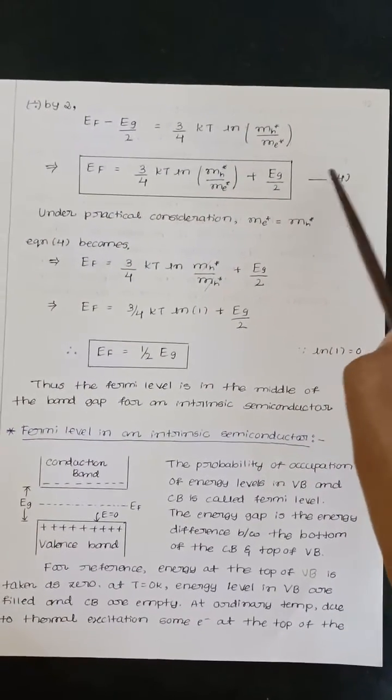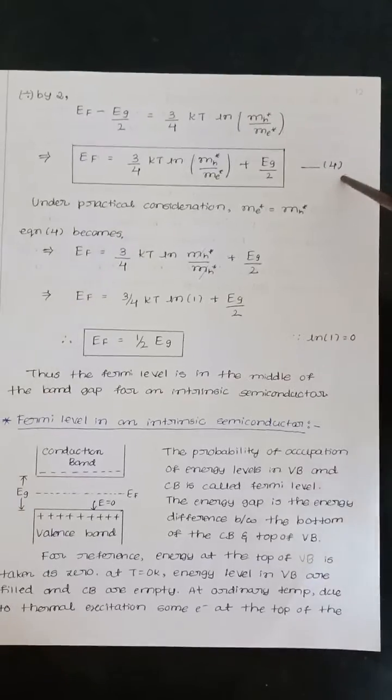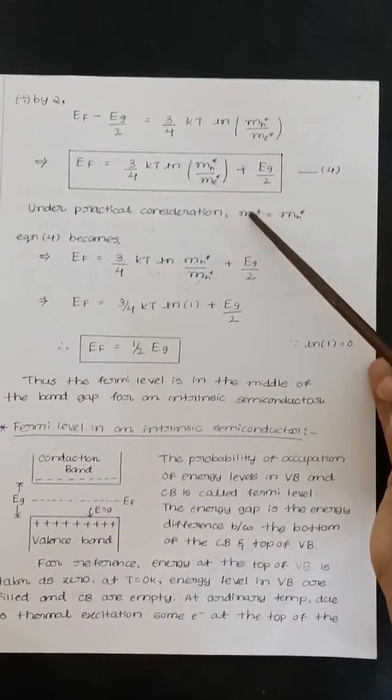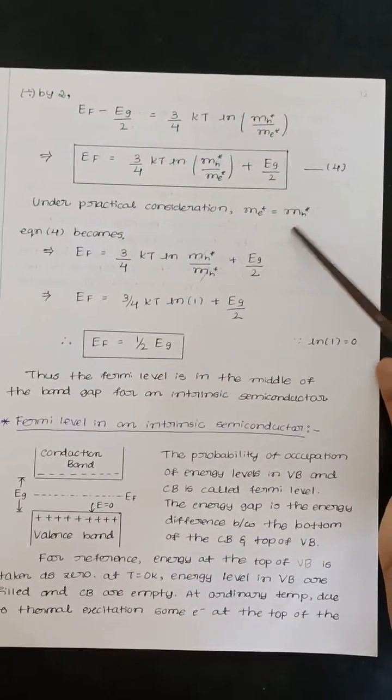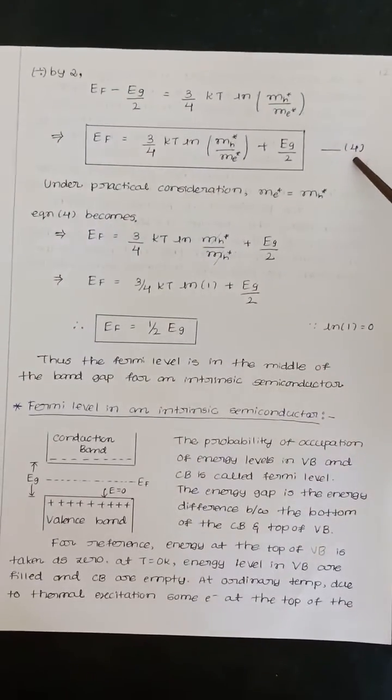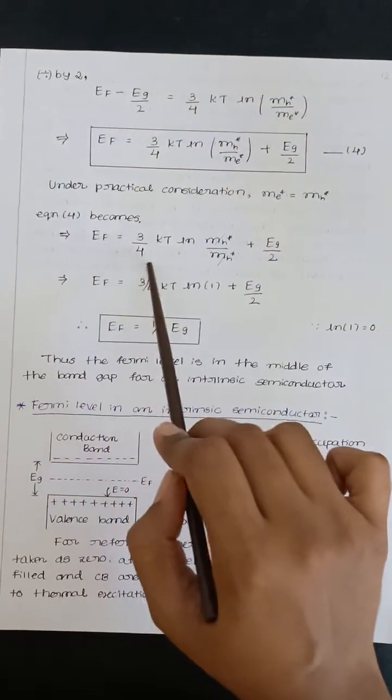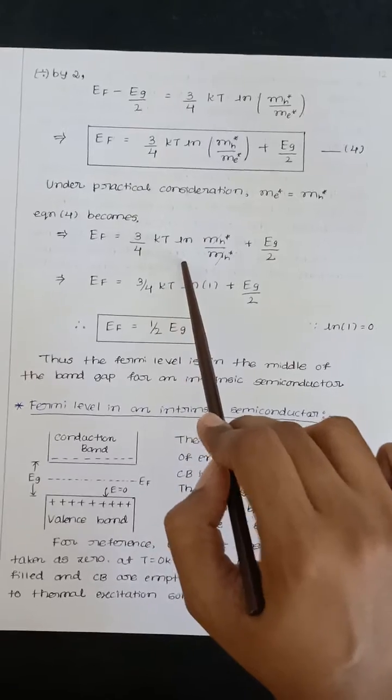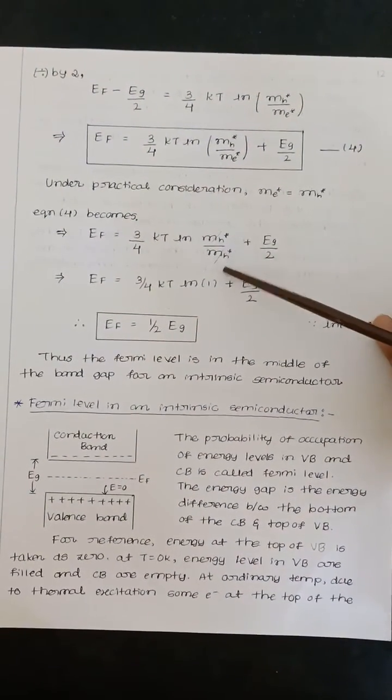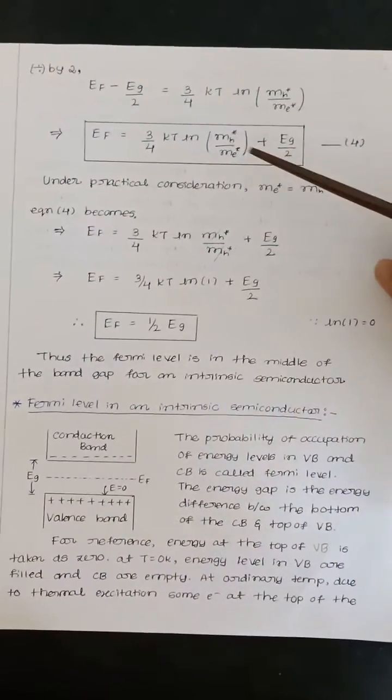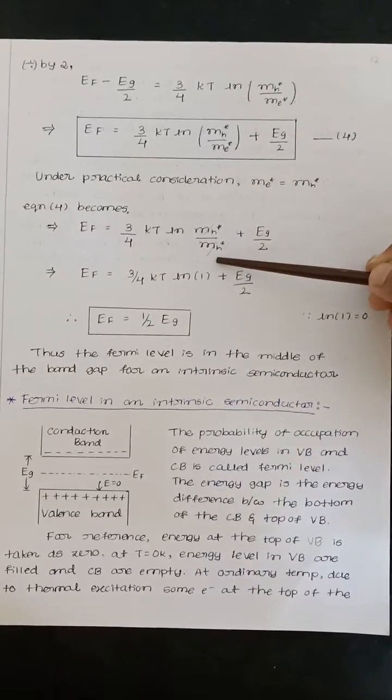Take it as equation number 4. By practical consideration, Me star equals MH star. Then equation 4 will become EF equals 3/4 KT ln of MH star divided by MH star. Here in case of Me star you have to write MH star.